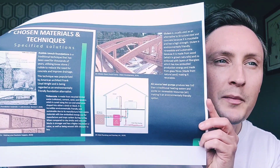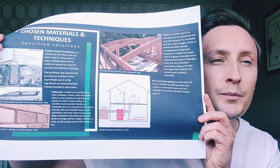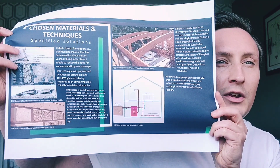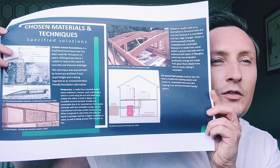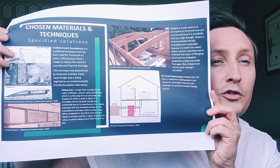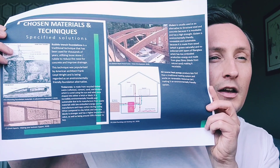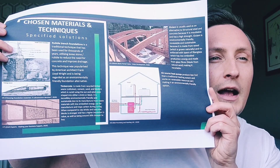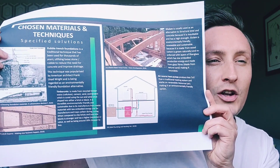Here are some examples of my chosen materials and techniques which I propose to use. The foundations would be rubble trench foundations. This is a traditional technique that has been used for thousands of years, utilising loose stone rubble to reduce the need for concrete and improve drainage. This technique was popularised by American architect Frank Lloyd Wright and is regarded as an environmentally friendly foundation alternative.